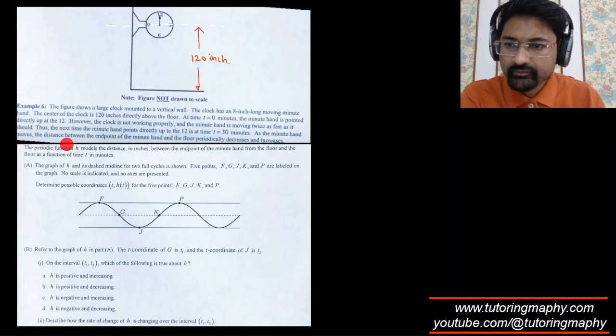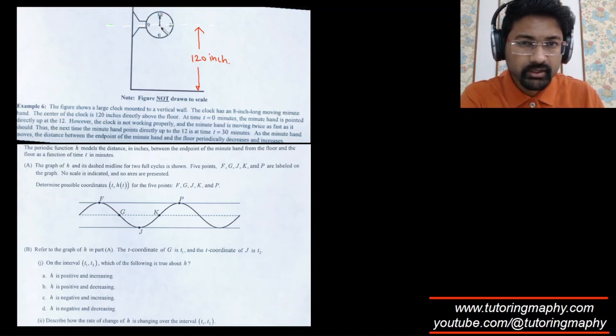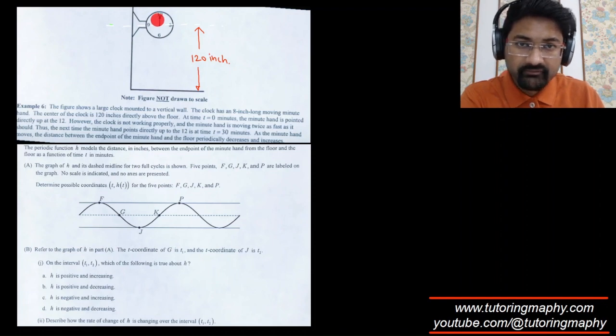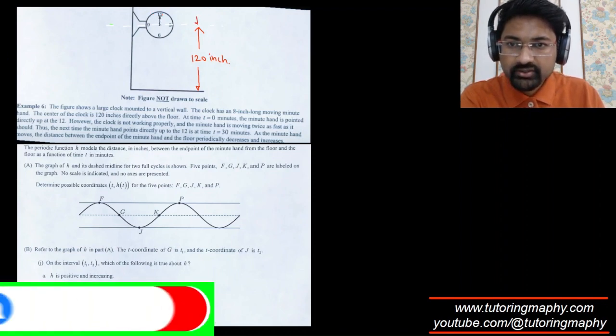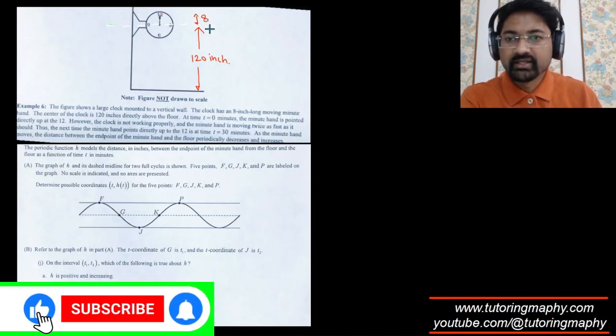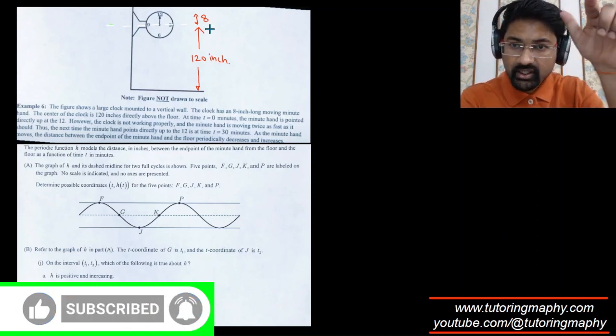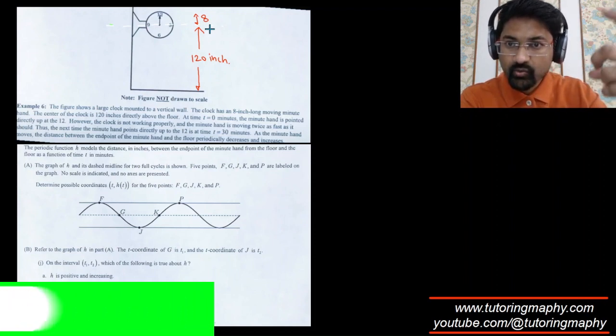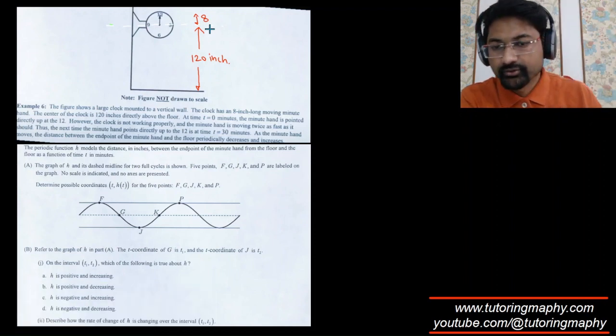As the minute hand moves, the distance between the endpoint of the minute hand and the floor periodically decreases and increases. Right now the tip of the minute hand is at 120 plus 8 inches because the length of the minute hand itself is 8 inches. When the minute hand is at 3, its height is 120. When it is at 6, the height is 120 minus 8, and so on.